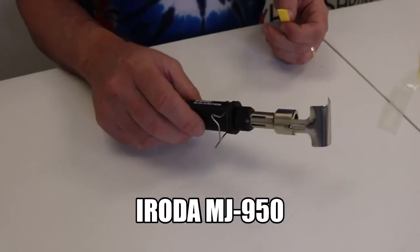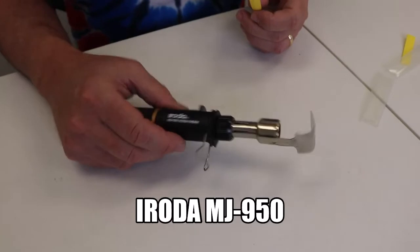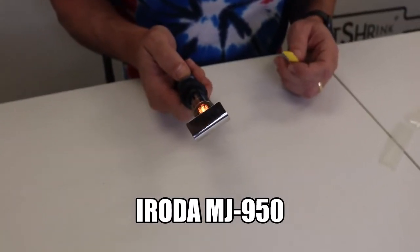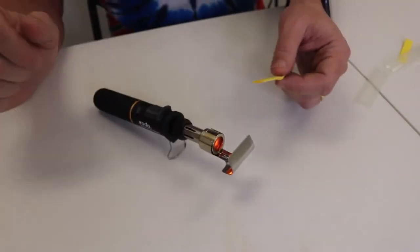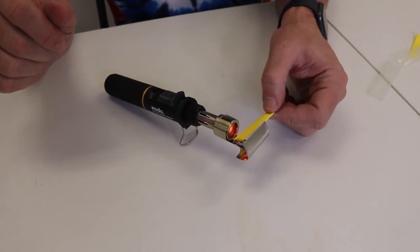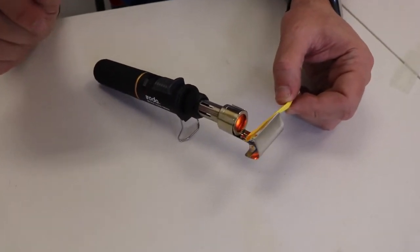This is our Eroda MJ950, it's a flameless heat gun. I've got a little deflector shield on there so it actually does shrink around the back side.